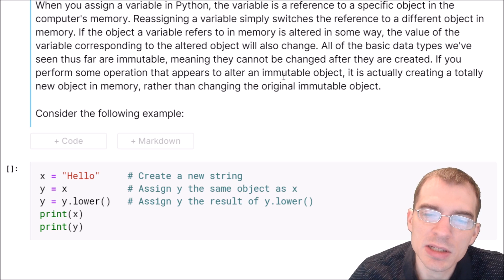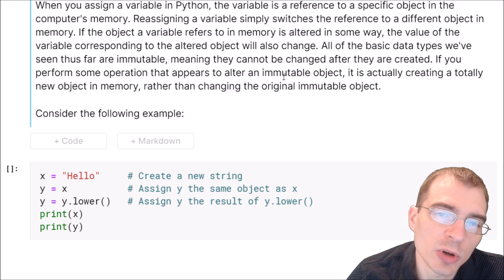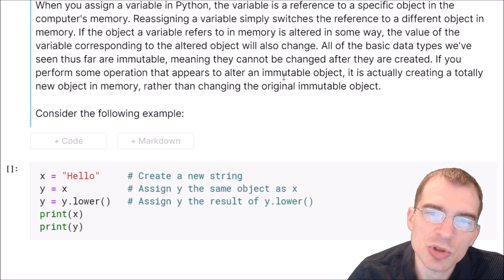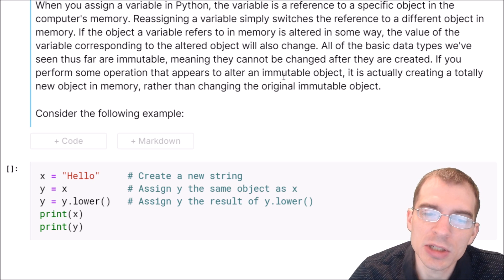All of the basic data types we studied in the last lesson are what's known as immutable, which means they can't be changed after they're created. If you perform some operation that seems to change or alter an immutable object, what's actually happening is a new object is being created in memory rather than actually changing the original immutable object.